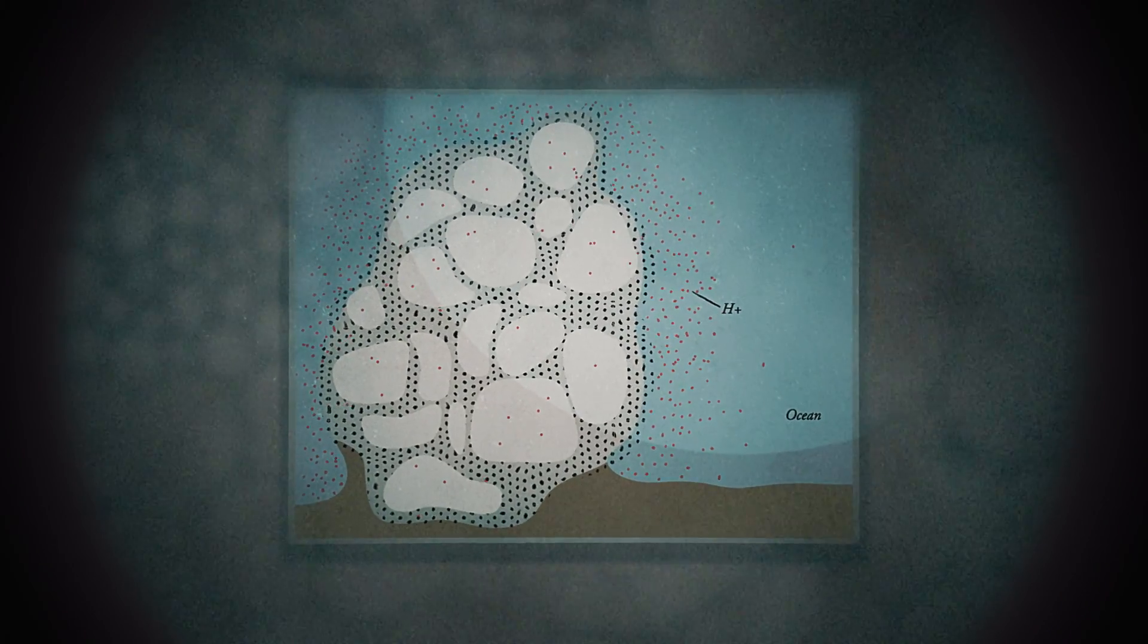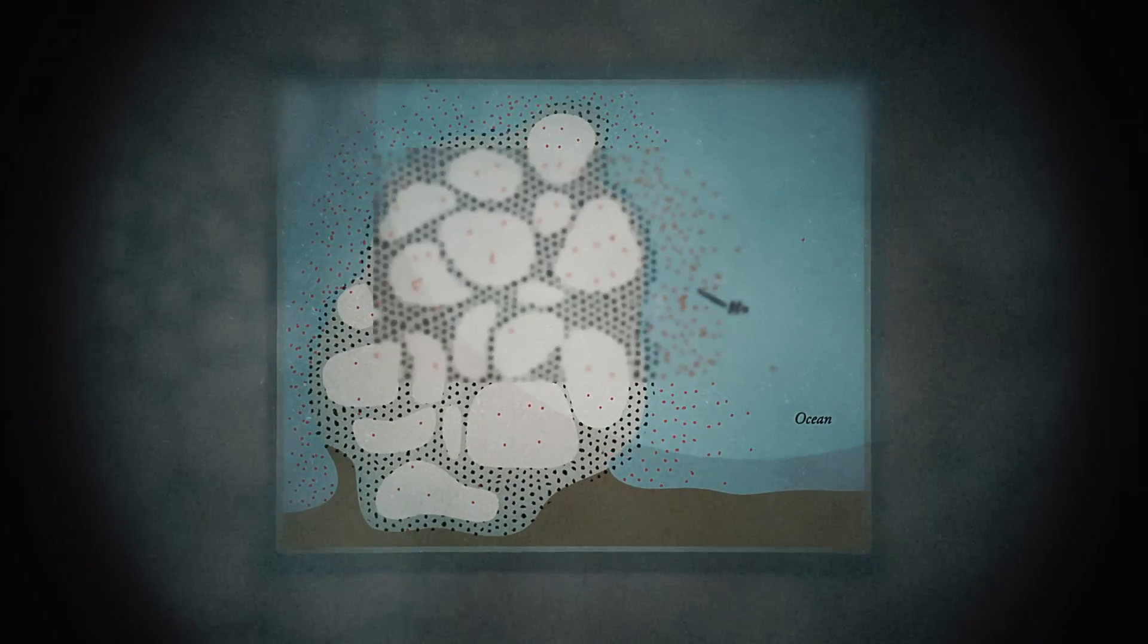The first cells may have formed within these vents, taking advantage of the natural proton gradients, and then about two billion years ago one cell got inside another cell and changed the whole structure of cells.